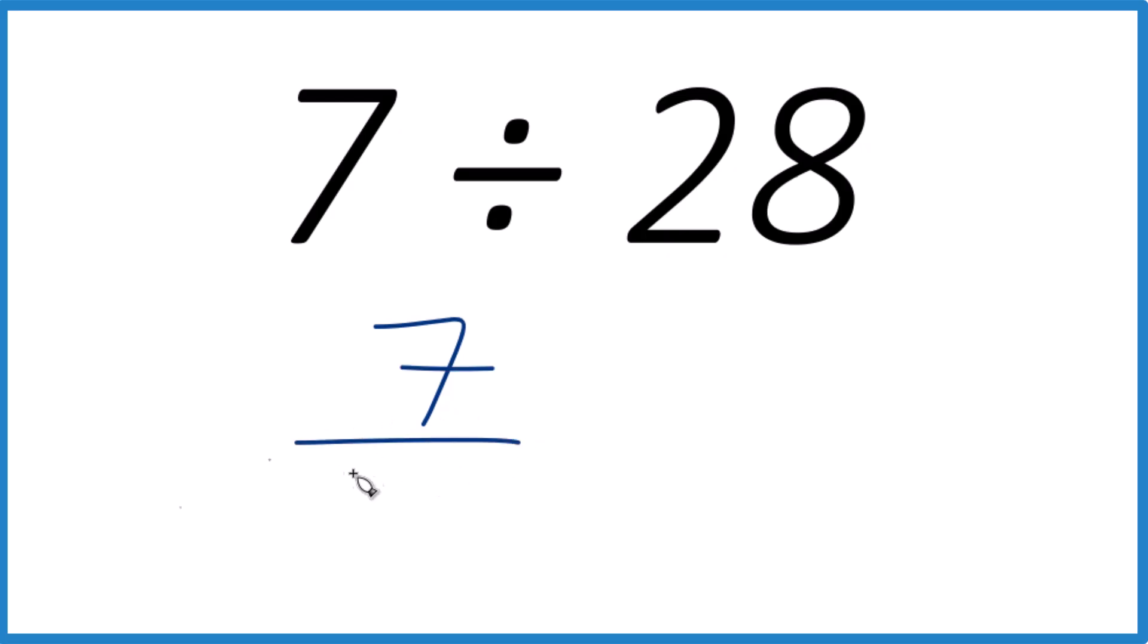We could write it as 7 over 28. And you can see 28, that's less than 7. So 7 divided by 28, that's going to be a decimal.